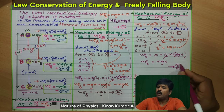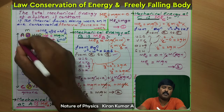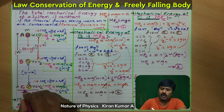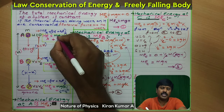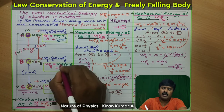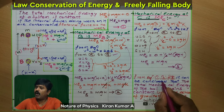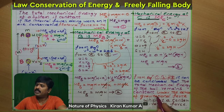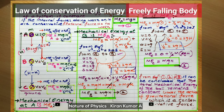Energy neither be created nor be destroyed — total energy remains constant. At point A: mgh; at point B: mgh; at point C: mgh. At point A, total energy is entirely potential energy. At point C, total energy is entirely kinetic energy. At point B, it is a sum of potential and kinetic energy. From equations 1, 2, and 3, it can be concluded that the total mechanical energy of the ball remains constant under the gravitational force, which is a conservative force. Please do like, subscribe, and comment. Thank you.